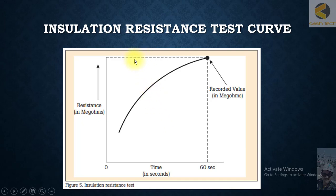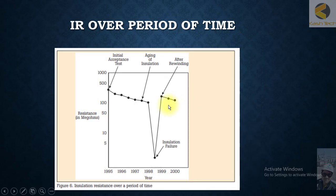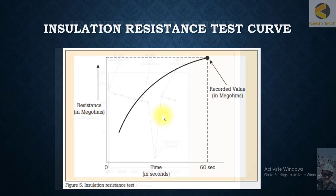Looking at the insulation resistance test curve: when you apply the voltage, the charging current slowly decreases, and the recorded megaohm value increases gradually. After approximately 60 seconds, you will get stable and proper results.